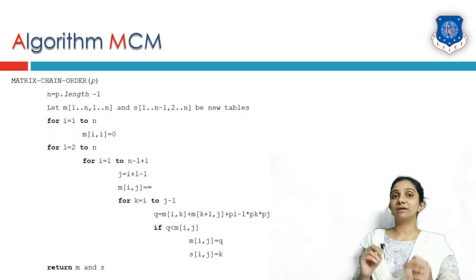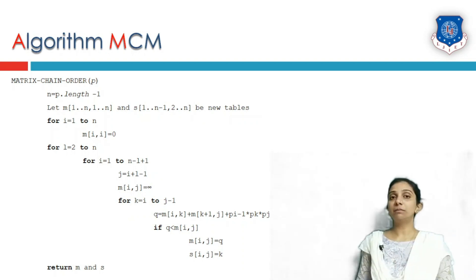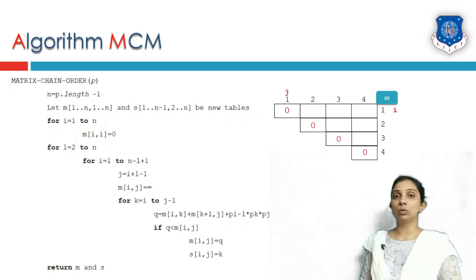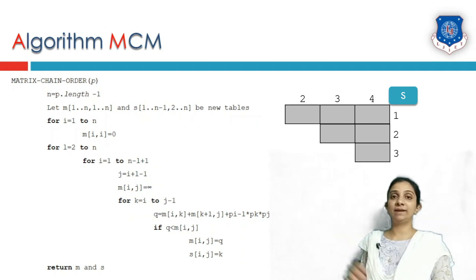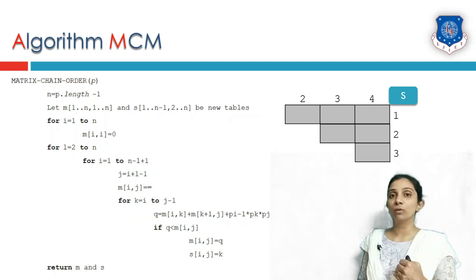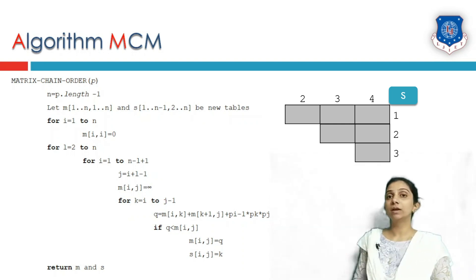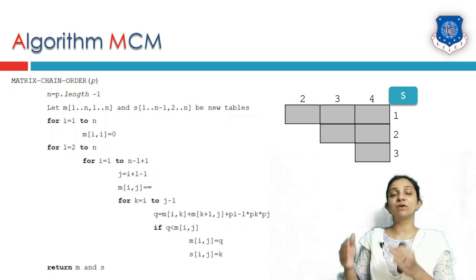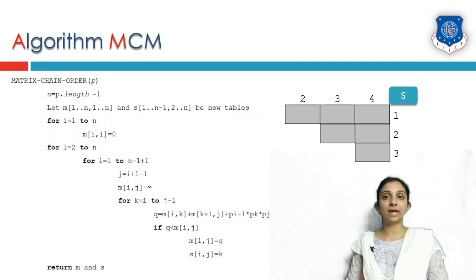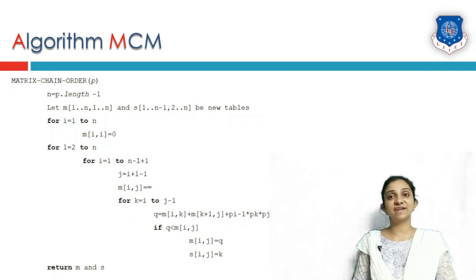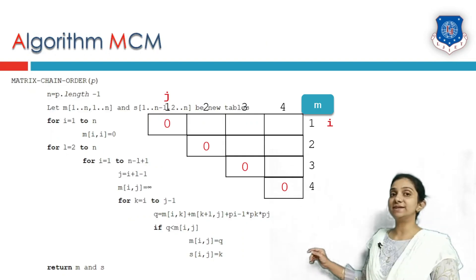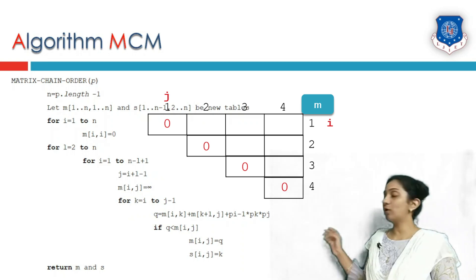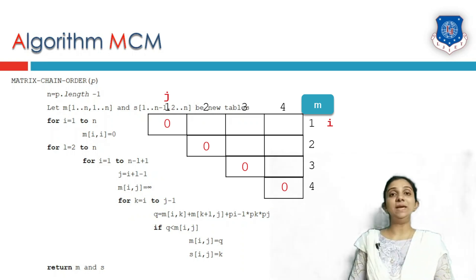Whatever elements are in my p, there will be one lesser matrix. My matrix is created from 1 to n, and the m table is also of dimension 1 to n, with rows from 1 to n minus 1 and columns from 2 to n — that is the dimension of my s table. These are two new tables, so their values will be initially 0. That's why we write: for i equals 1 to n, m[i][i] = 0. All diagonal values will be set to 0.